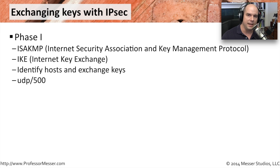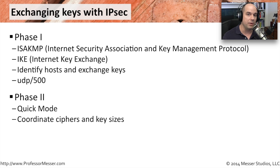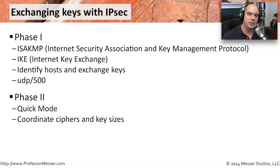In phase one, both sides recognize each other, security is verified, and keys are exchanged. Once phase one is complete, phase two — called Quick Mode — begins. In Quick Mode, each device communicates what ciphers, protocols, and key sizes it would like to use. Both sides coordinate and decide on these parameters. After phase one and phase two are up and running, the IPsec endpoints can communicate securely between them.